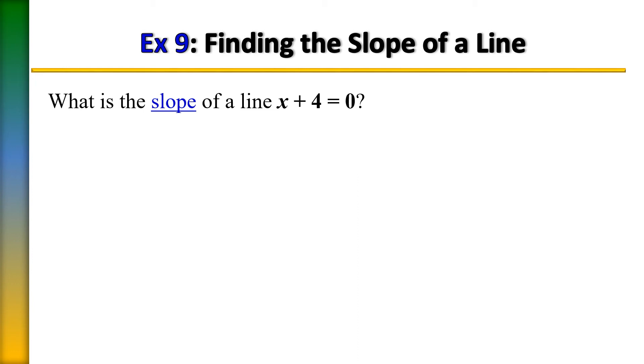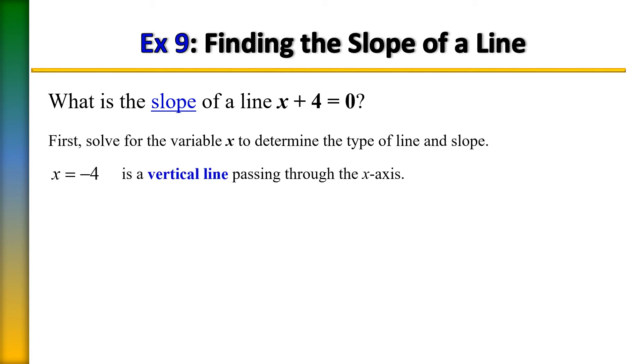Now the first step toward determining what the slope is, is you need to isolate the variable by itself and put the number on the other side. So to do that all I need to do is to simply subtract 4 from each side to solve for x, and x would equal negative 4. So that means that would be a line passing through the x-axis at negative 4, which is a vertical line.